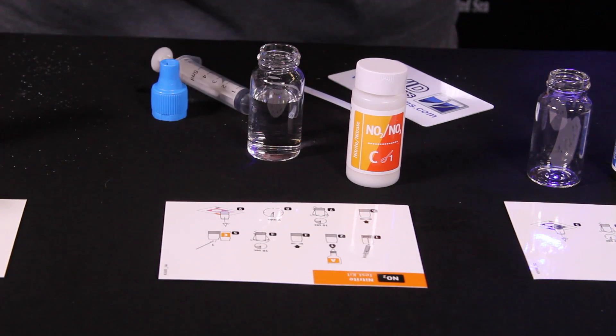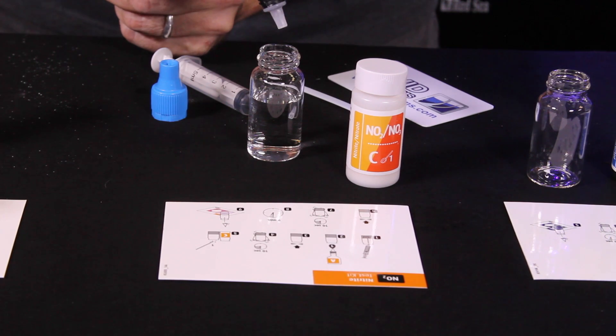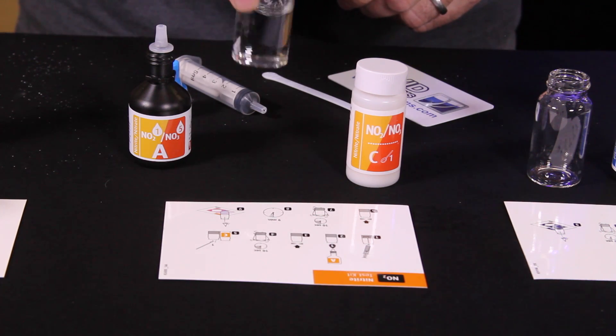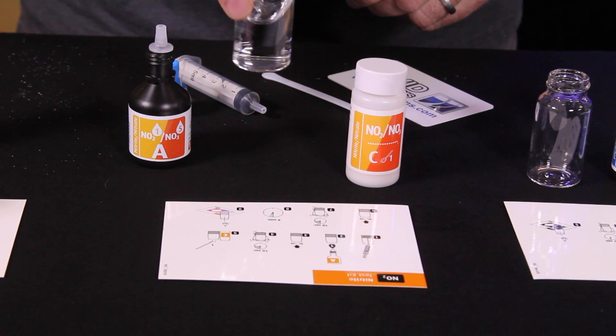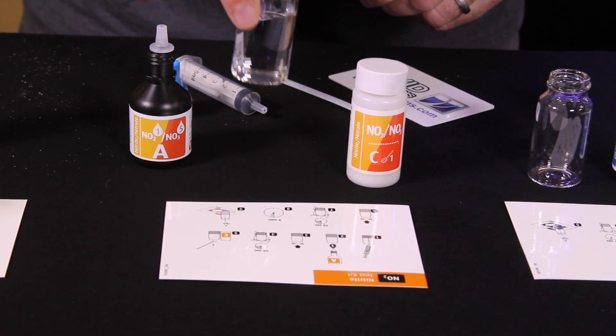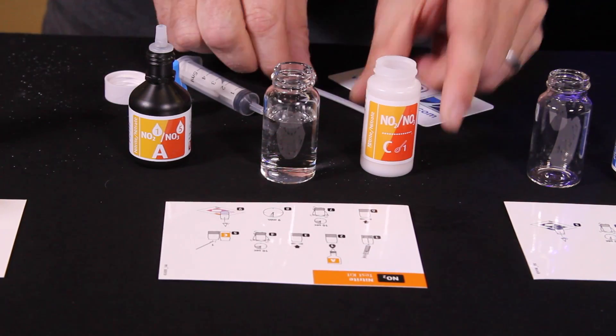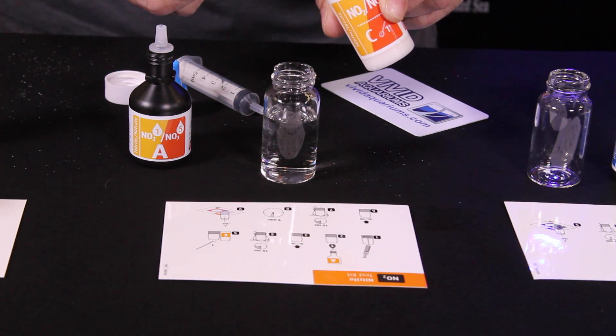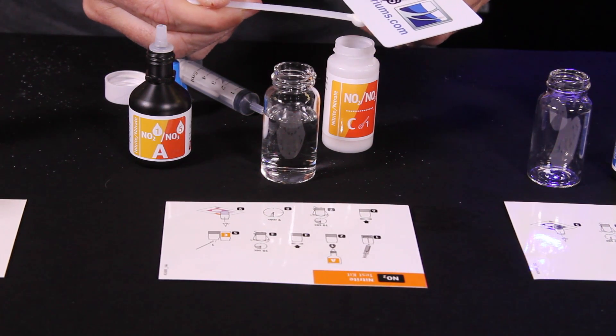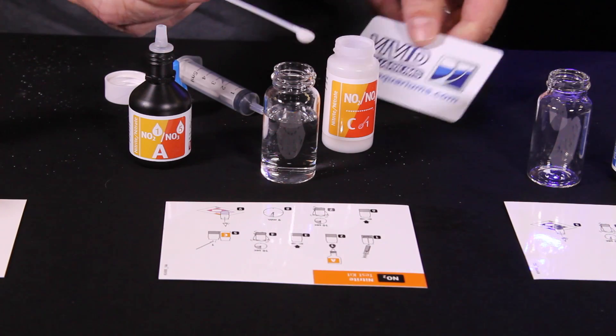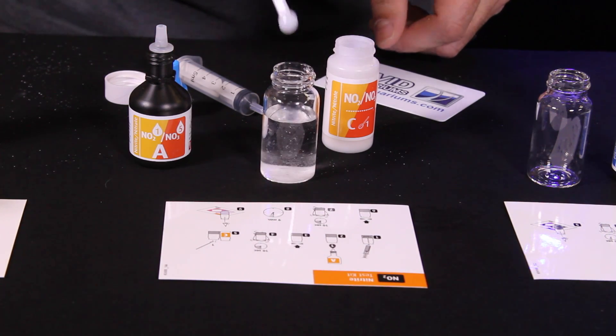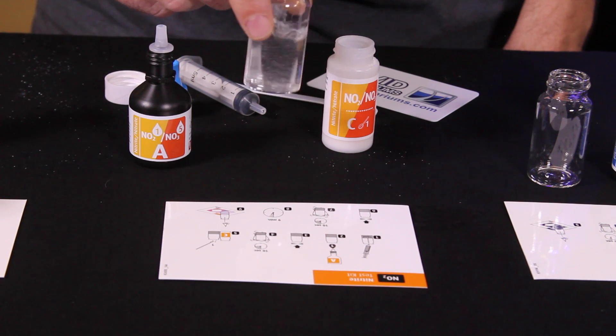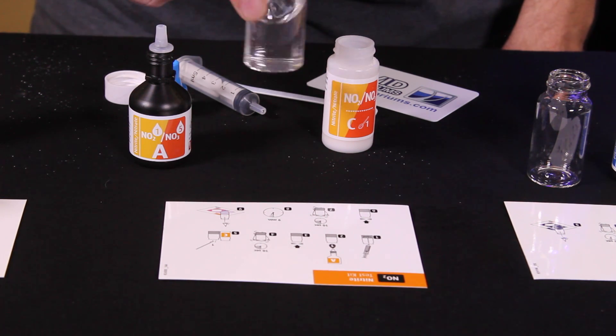My first step is to add one drop of reagent A. And then we need to swirl the sample vial for 10 seconds. And then we need one level scoop of reagent C. Put that into our test vial. Now we need to swirl again for 10 seconds.